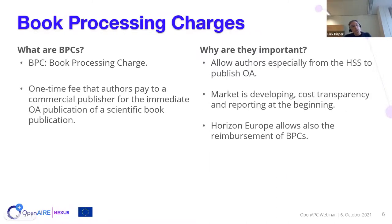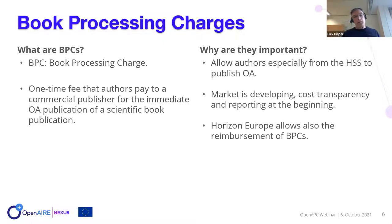APCs are not the only fees paid in open access publishing — there are also Book Processing Charges (BPCs). From our experience at our university, many scientists especially from the humanities and social sciences said it's great that you support journal articles in open access, but what about disciplines that prefer to publish books? That was one motivation to think about how we can create transparent reporting for book processing charges.